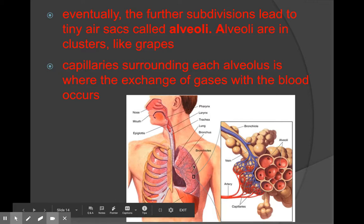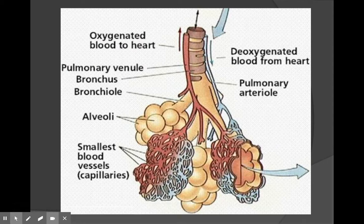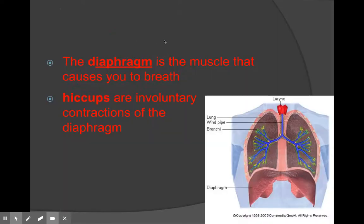Here's a cutaway section. This is a diagram illustrating how the deoxygenated, or oxygen-poor, blood goes into the alveoli section, and then it pumps back — full of oxygen — as oxygenated blood back into the heart.